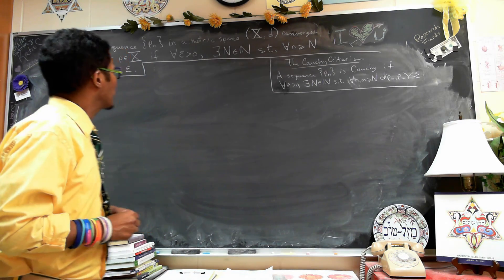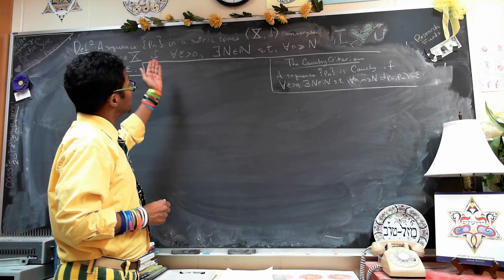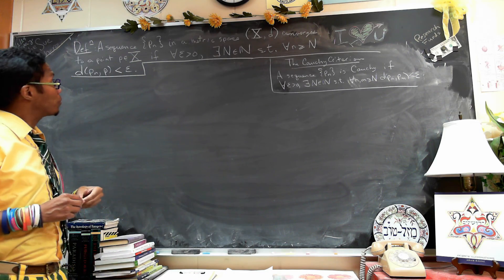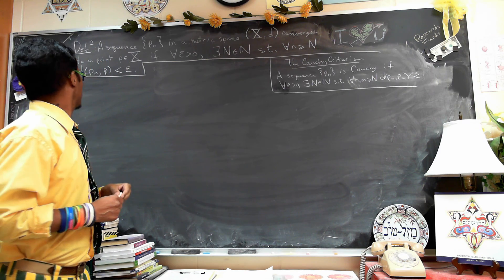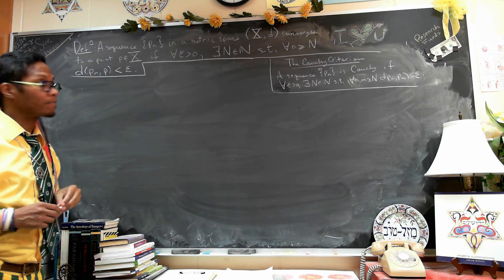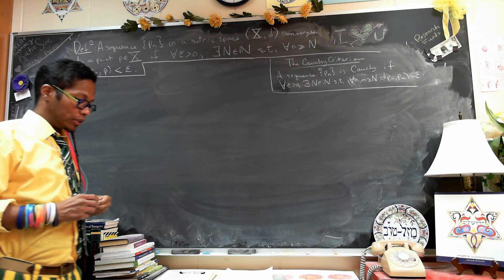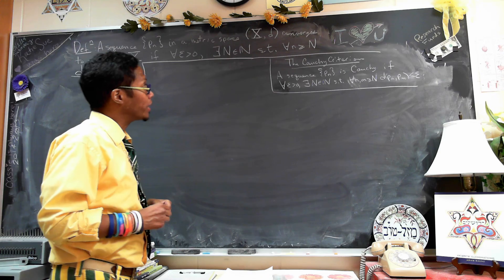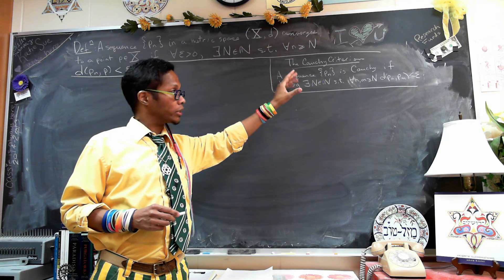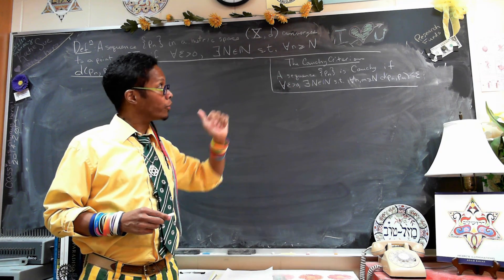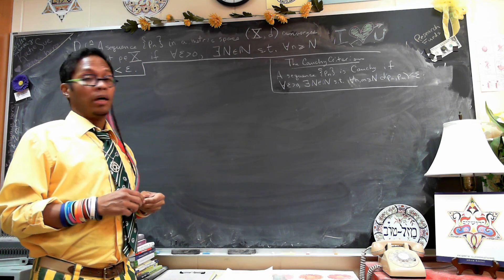This is video two. We have this condition saying a sequence in a metric space X converges to a point if and only if for all epsilon greater than zero there's a point in the sequence where all the p_n's approach some p. There's an alternate way to prove if a sequence is convergent, and that's the Cauchy criterion. We know that every sequence that converges is Cauchy, but not necessarily every sequence that is Cauchy is convergent. However, in complete metric spaces such as the real line or R^K, we have the fact that Cauchy implies convergence.